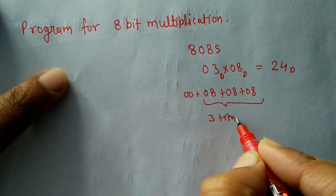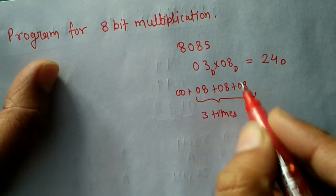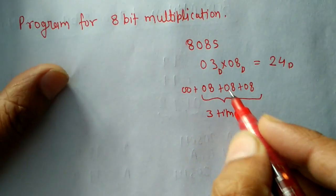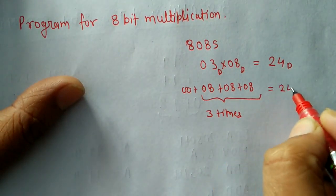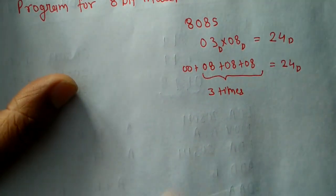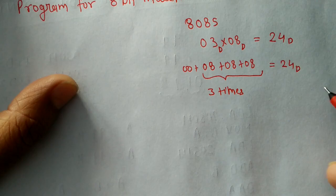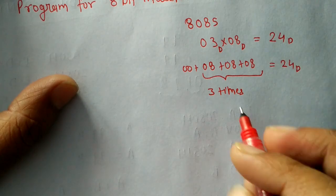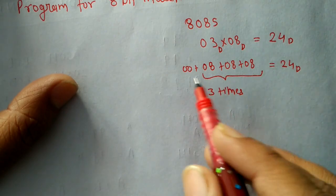We will perform addition in a loop, and the loop will run three times, giving us the result 24 in decimal. When we multiply two 8-bit numbers, the result may be 8-bit or it may also be 16-bit. That means we will have to take care of the carry generated during repeated addition.